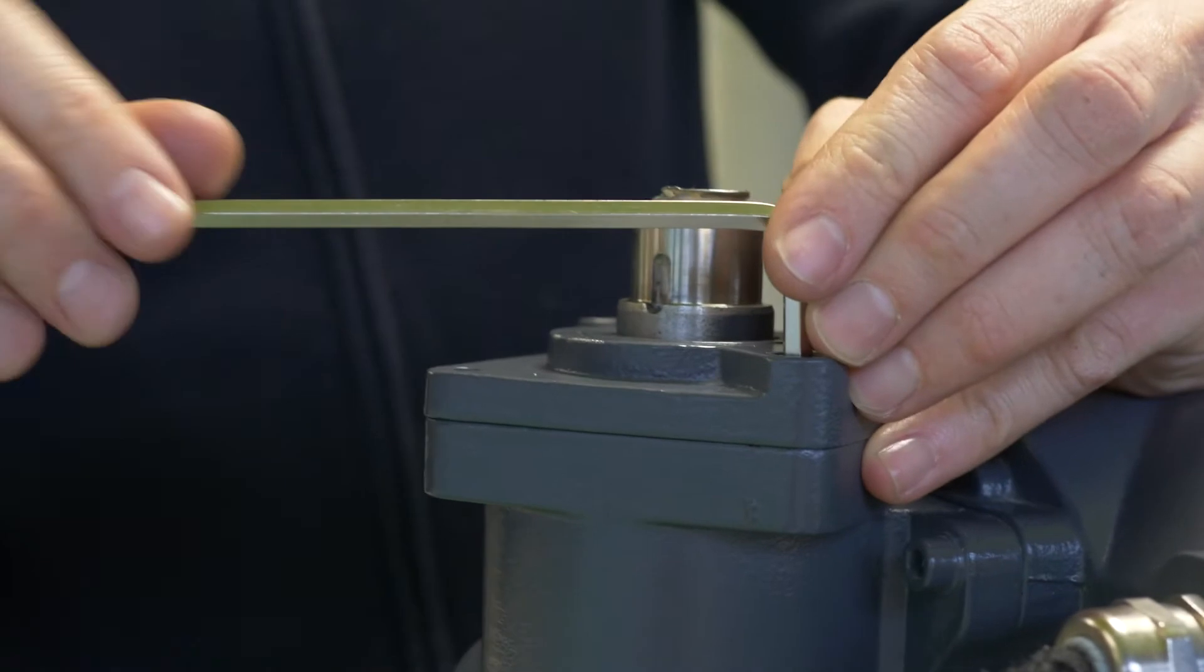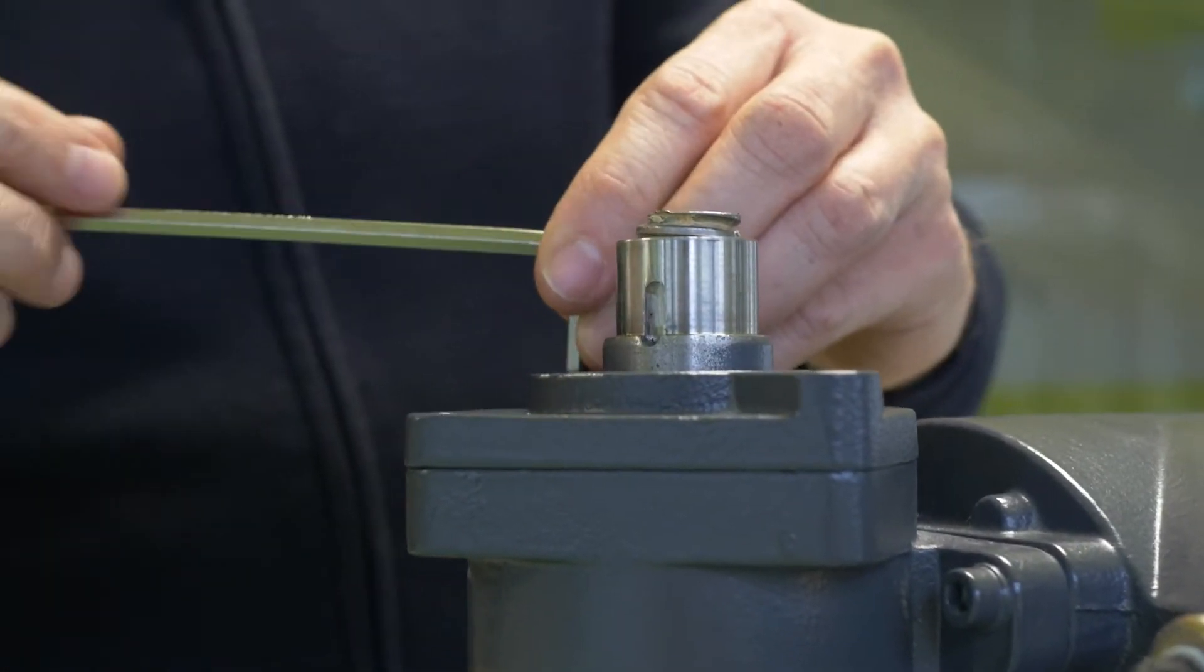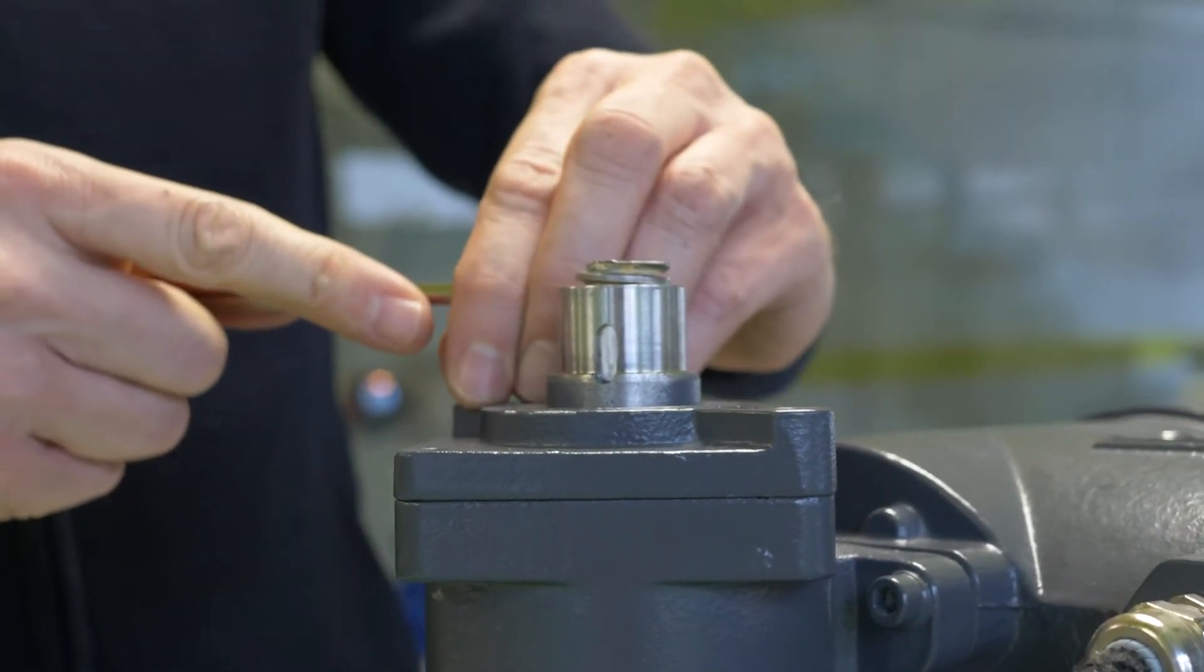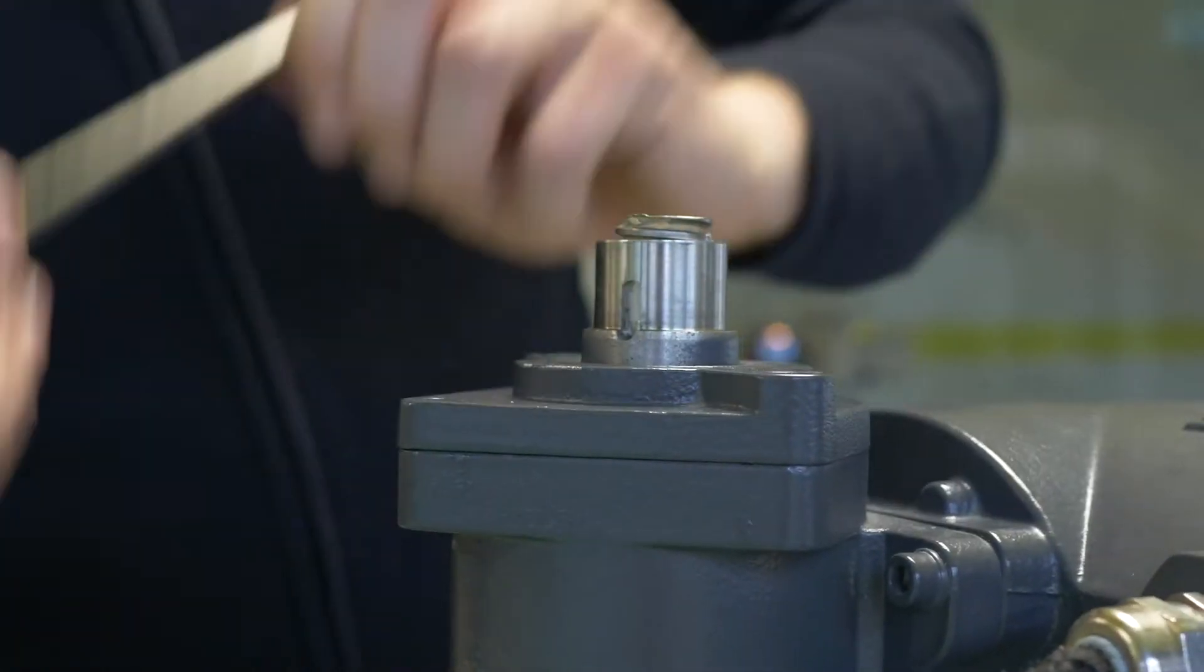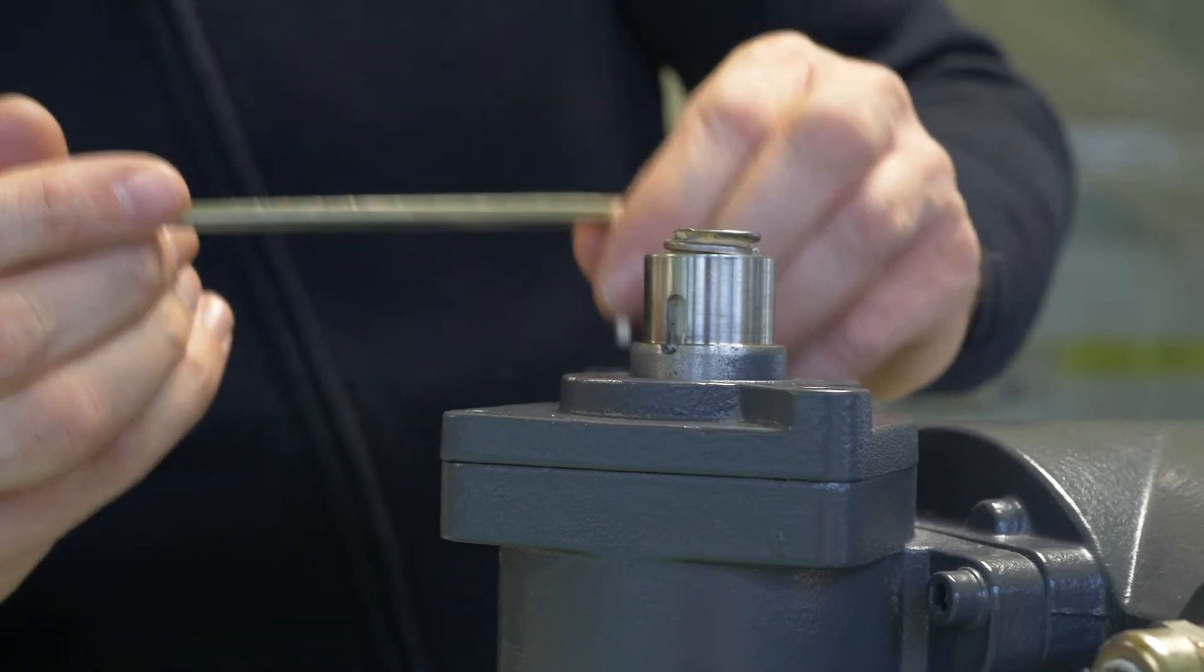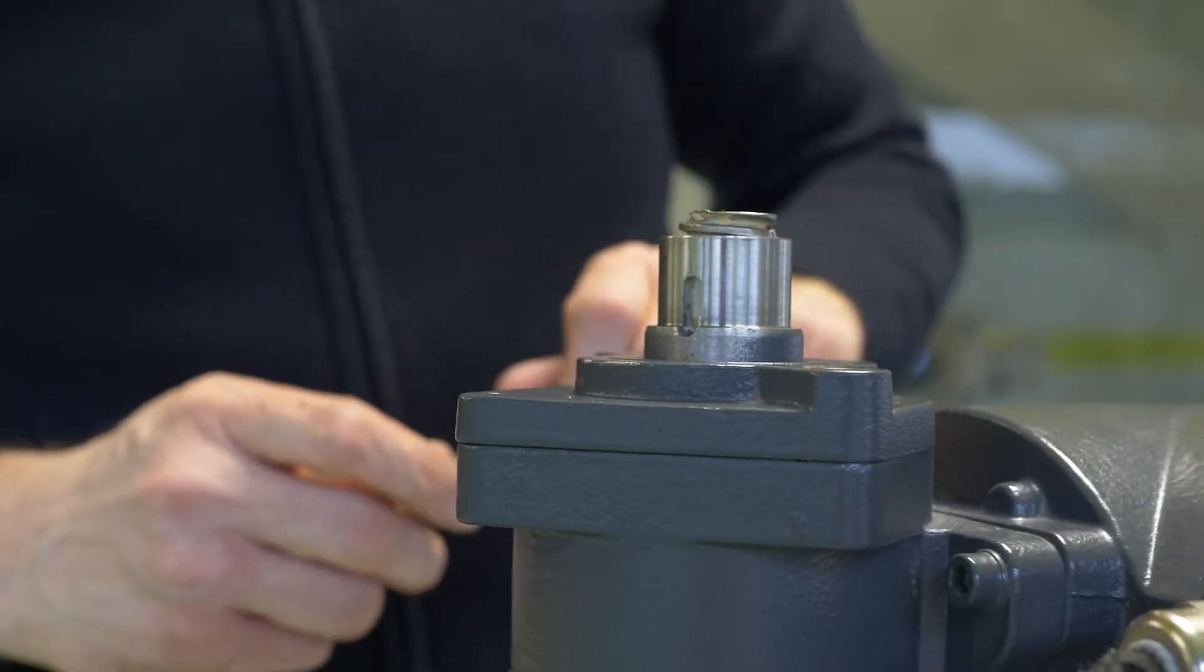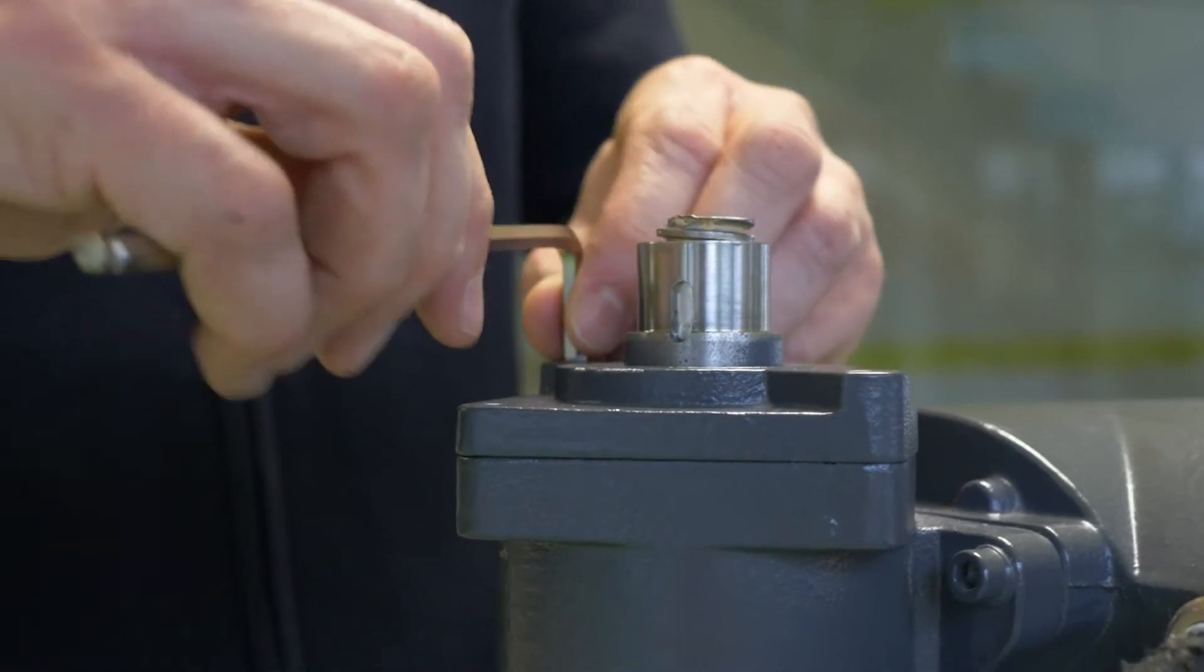You should be careful to tighten it not too strong because we have here an aluminum housing and it could happen that you damage the thread in the housing. When this happens you have to change the complete actuator housing and this is not so funny.